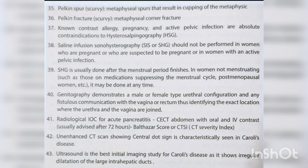Genitography demonstrates male or female type urethral configuration and any fistulous communication with the vagina or rectum, identifying the exact location where the urethra and vagina are joined. Radiological IOC for acute pancreatitis — CECT abdomen with oral and IV contrast, usually advised after 72 hours, using Balthazar score or CT Severity Index (CTSI). Unenhanced CT scan showing central dot sign is characteristically seen in Caroli's disease. Ultrasound is the best initial imaging study for Caroli's disease.